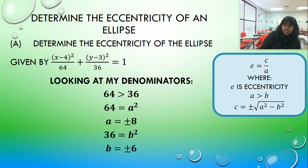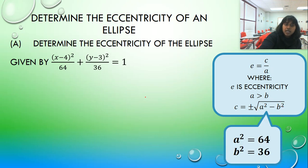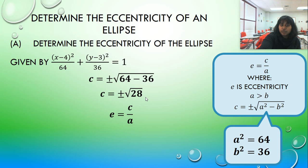So if I know all this information, let's plug it into our C formula right here. And since it is A squared and B squared, we can use 64 and 36. So I went ahead and used that information, and C is the square root of 28. So my eccentricity is going to be the square root of 28 divided by 8.